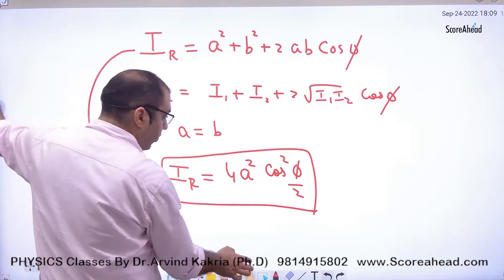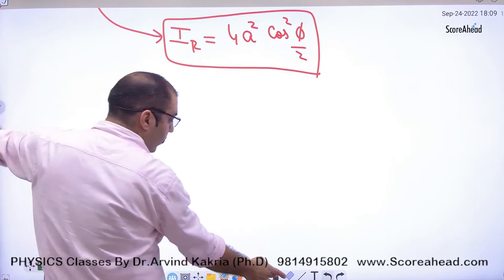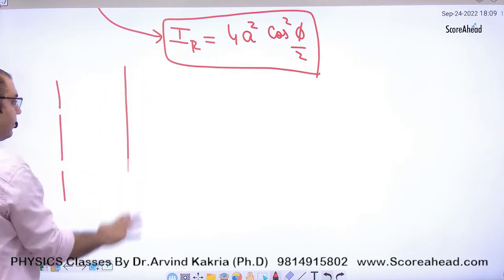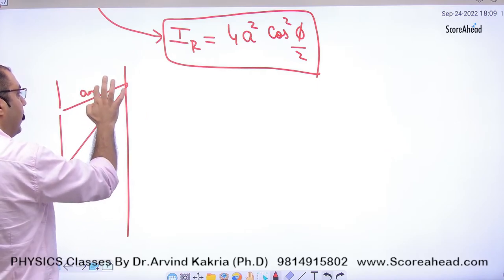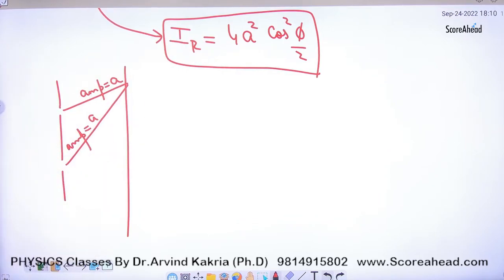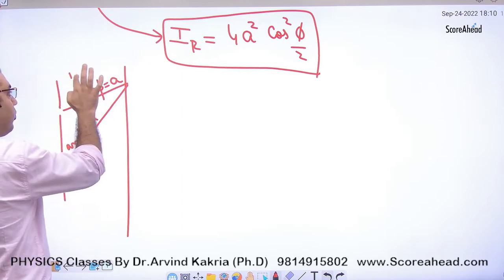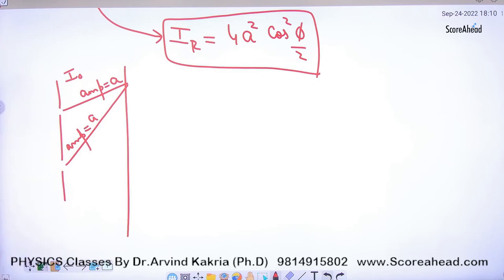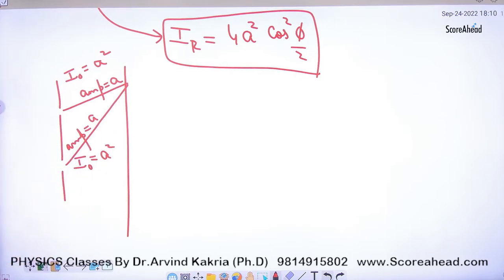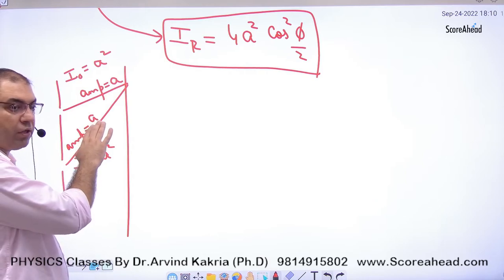अब आगे देखो — the resultant intensity is 4a²cos²(φ/2). मैं यह बोलने की कोशिश कर रहा हूं कि अगर मेरे पास 2 slits हैं और एक screen है, एक wave है और दूसरी wave है, तो इसका amplitude a लिया और इसका amplitude भी a लिया — तभी यह formula बना। अब अगर इसका amplitude a है और इसका भी a है, तो इसकी intensity I₀ है, और इसकी intensity भी exactly I₀ ही होगी। तो यहां a² की जगह I₀ put कर सकते हैं।